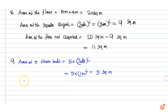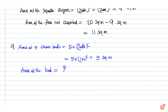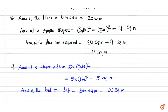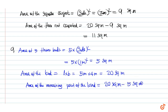The area of the land is equal to length into breadth, equal to 5 meters into 4 meters, equal to 20 square meters. The area of the remaining part of the land is equal to 20 square meters minus 5 square meters, equal to 15 square meters.